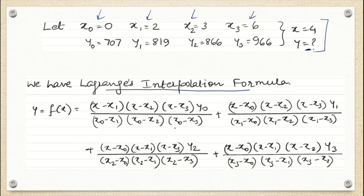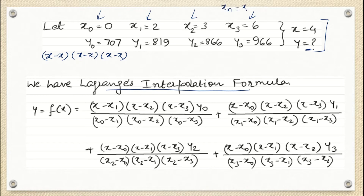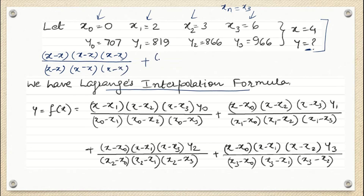There are four terms in the formula. Each term will have numerator and denominator with (x - x_i) factors. The number of such factors depends on n — here xn is x3, so n = 3, meaning we write (x - x_i) three times in both numerator and denominator. We will write down four terms total, and in the numerator of the first term, we write (x - x1)(x - x2)(x - x3).